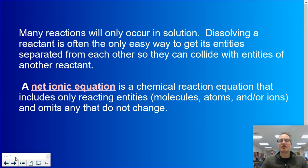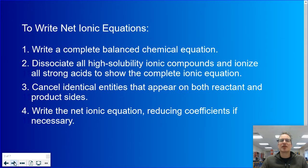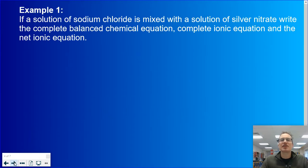A net ionic equation is a chemical reaction equation that includes only reacting entities, whether they be molecules, atoms, or ions, and it omits any that do not change. To write net ionic equations, we are going to follow these four steps. I'm going to do an example, and when we're finished, please go back to this page in your notes and make sure you understand the four steps.